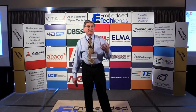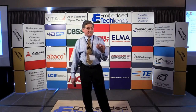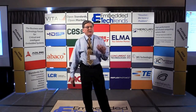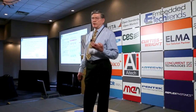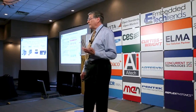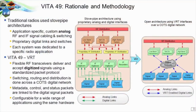What Vita 49 does is it digitizes the signals as early as possible, as close to the antenna as possible, and then routes the digital signals through digital switched networks to implement the connectivity for different systems. The red lines represent analog signals, and in the case of going to VRT, the blue lines have largely replaced a lot of the red lines — the analog plumbing. So that's the rationale for Vita 49 or VRT.